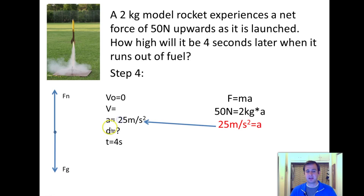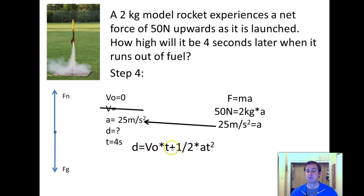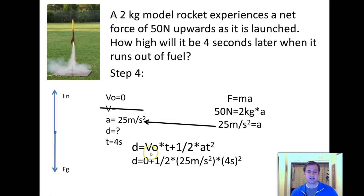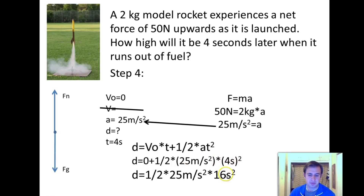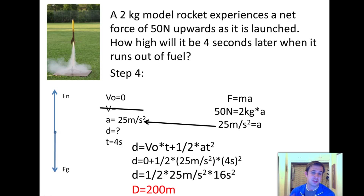Now I plug in acceleration = 25 meters per second squared. I know V0, T, and need D, which means I don't need V. I use the 'don't need V' equation: D = V0·T + ½AT². Starting velocity is zero, so that term drops out. Then ½ times 25 meters per second squared times 4 seconds squared: squaring 4 gives 16 seconds squared, and ½ times 25 times 16 equals 200. The seconds squared cancel, leaving 200 meters — the rocket travels 200 meters before the engine cuts out.